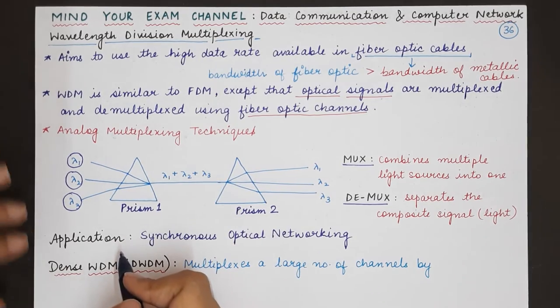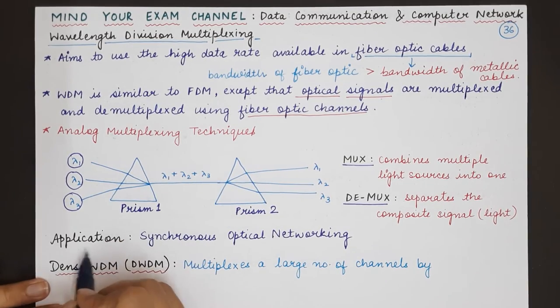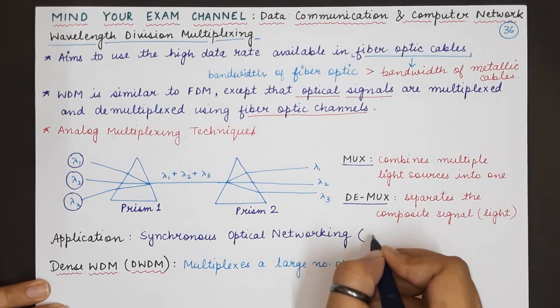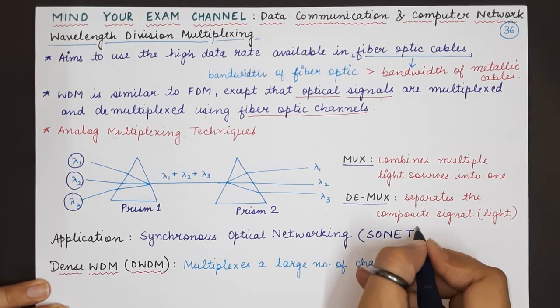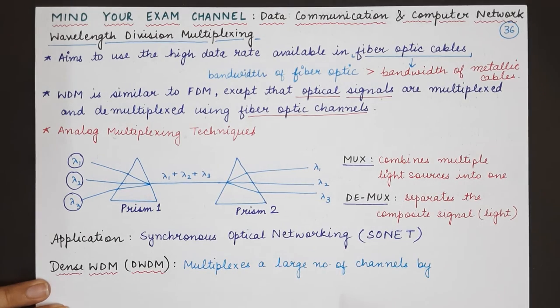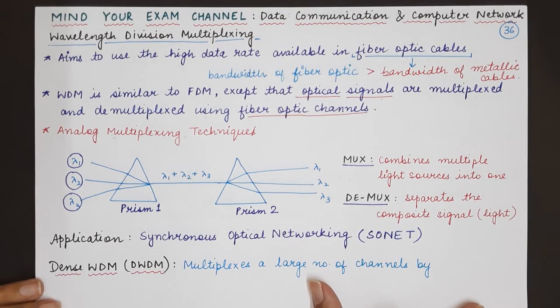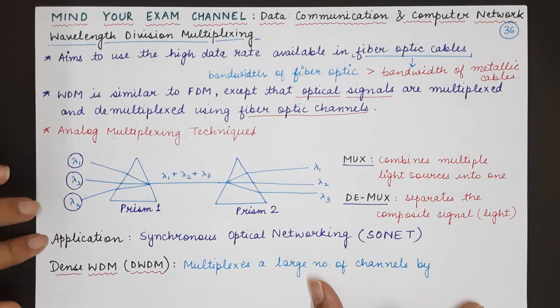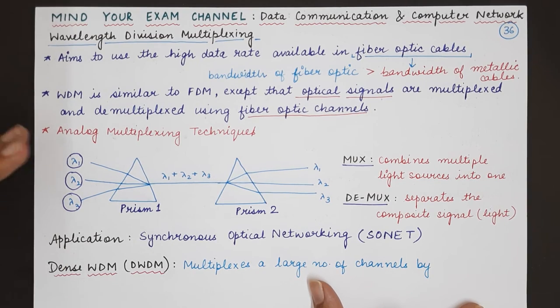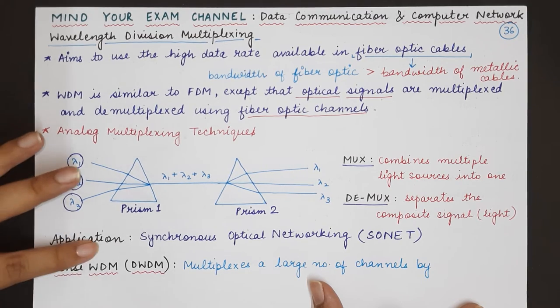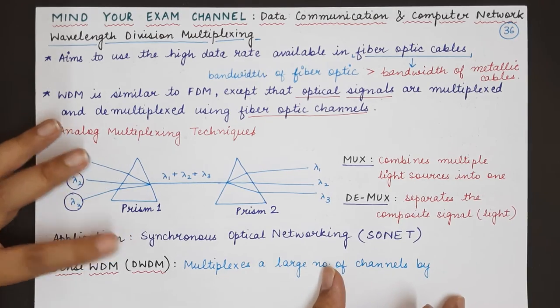Now one application of wavelength division multiplexing is synchronous optical networking which is famously known as SONET. So the details of SONET we will be covering in the later videos but for now you can understand that just like frequency division multiplexing was useful in AM and FM radios, in wavelength division multiplexing the use comes in the case of SONET devices.